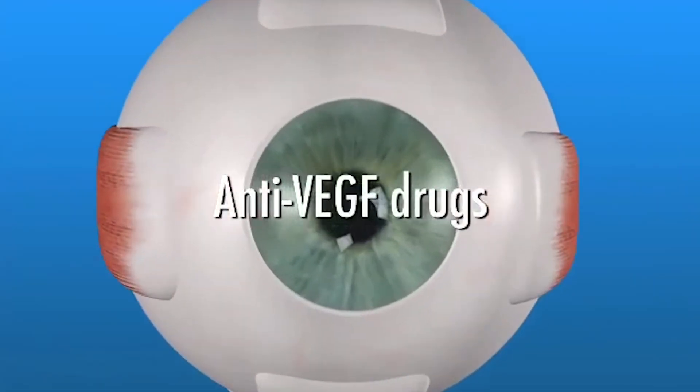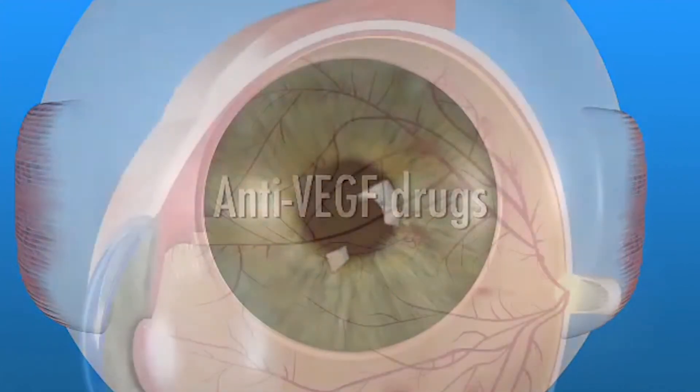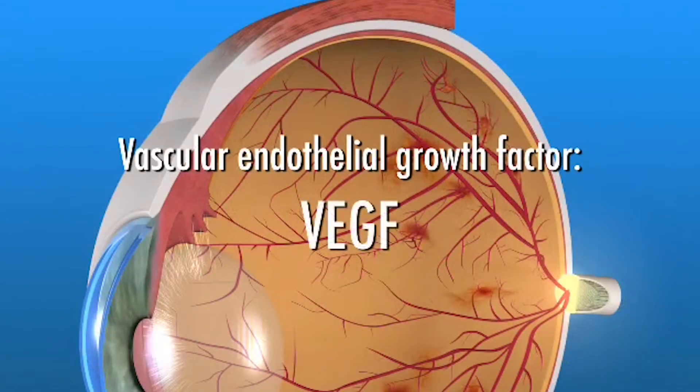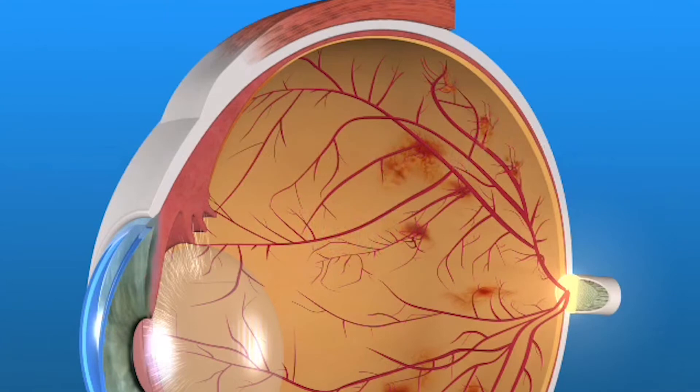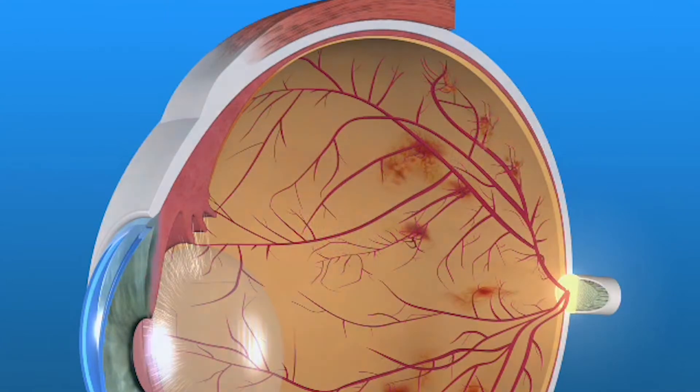These treatments include anti-vascular endothelial growth factor injections. These injections inhibit growth factors that the retina produces as an abnormal response to macular degeneration, which leads to the growth of blood vessels that can cause bleeding, swelling, or scarring.